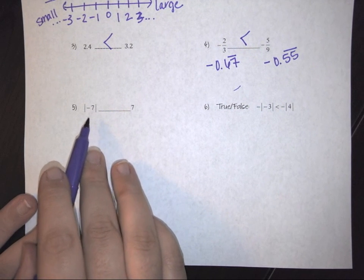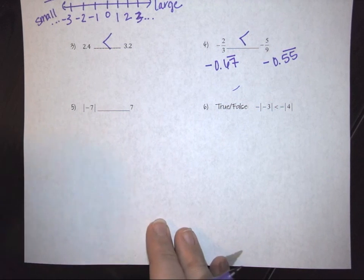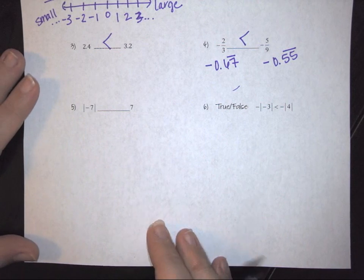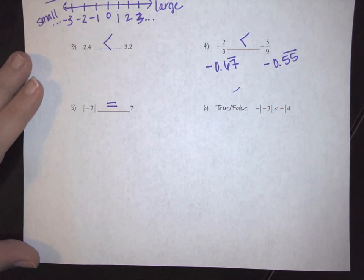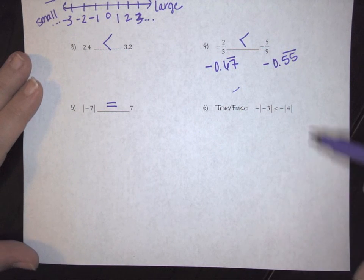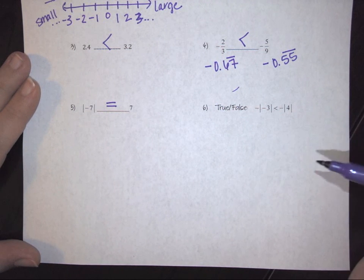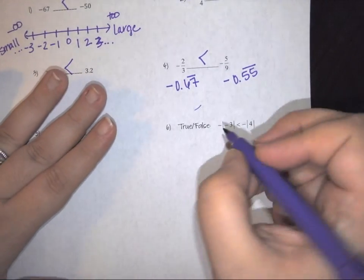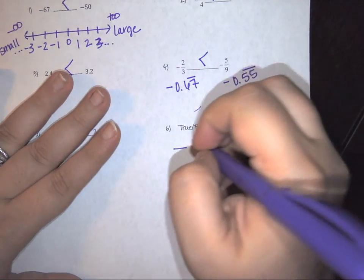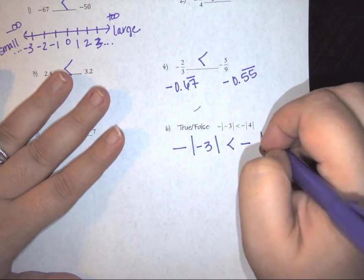For the absolute value of negative 7 compared to 7: evaluating the absolute value means whatever goes in comes out positive, so the absolute value of negative 7 is 7 — therefore these two values are equal. Last, we check whether the negative of the absolute value of negative 3 is less than the negative of the absolute value of 4.